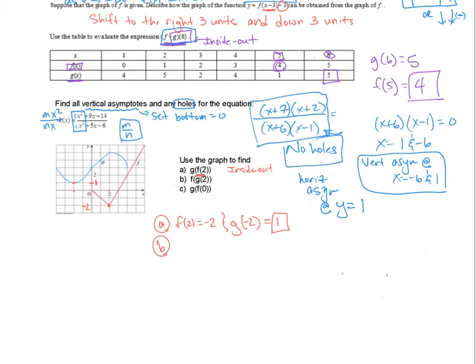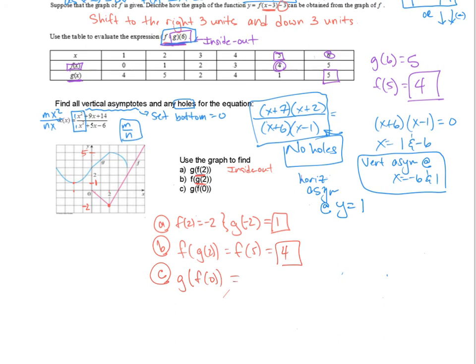For part b, f of g of 2 — going inside out, start with g of 2. I go to x equals 2 and move up to the g graph; that value is at 5. So now I need f of 5. I find x equals 5 on the f graph and that value is at 4. Finally, g of f of 0: find f of 0 — that's just 0. Then g of 0 — go to x equals 0 on the g graph, and that value is 3.